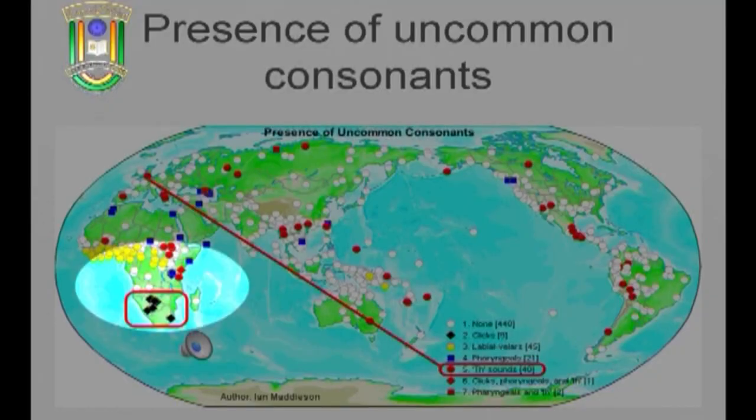Further around the world, there is a group of languages in southern Africa that have a very specialized kind of sound — click sounds. These languages are largely members of the Khoisan family. Click sounds are actually found in English, but not in the English sound system. For example, if you don't like what somebody says, you might make a disapproving click — but this is not part of ordinary English words. Another example is the click used to encourage a horse to move forward. Languages in southern Africa have a very rich inventory of click sounds.